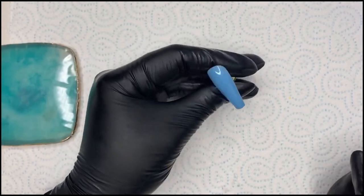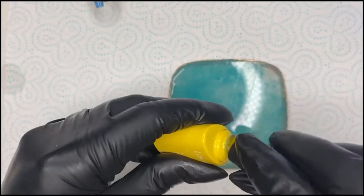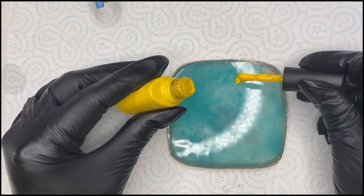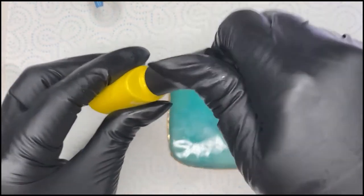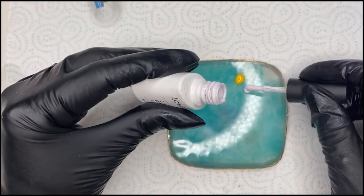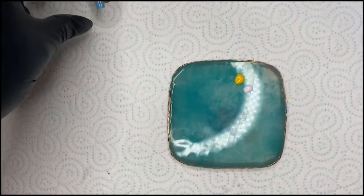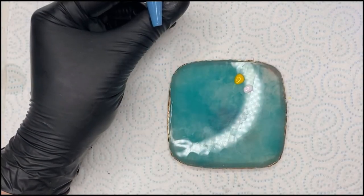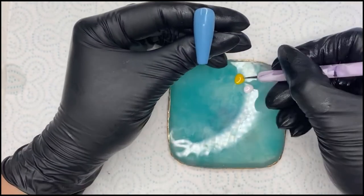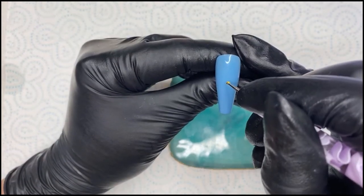We will pop our colors on here on the palette, and again the palette you can get from Amazon, AliExpress, anywhere like that. They don't need to be from professional nail sites. I will take my smallest dotting tool for the middle of my daisy, just popping it in there.